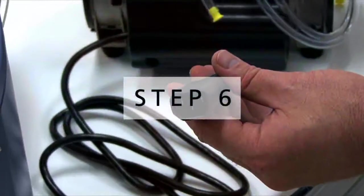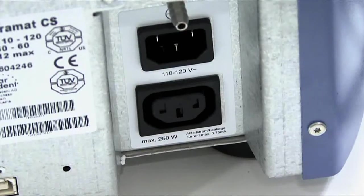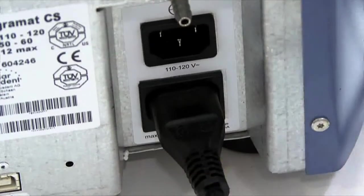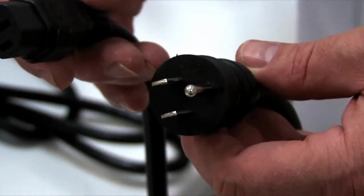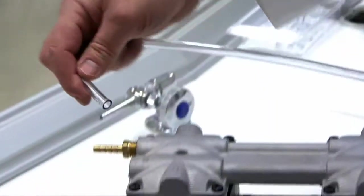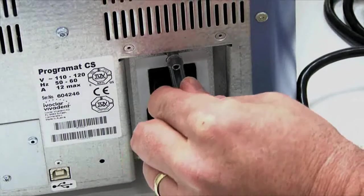Step 6. Establish additional connections by connecting the power supply cord with the socket of the furnace and plugging into the wall outlet. Next, connect the vacuum pump plug with the vacuum pump socket on the furnace, and then connect the vacuum hose to both the pump and the furnace.